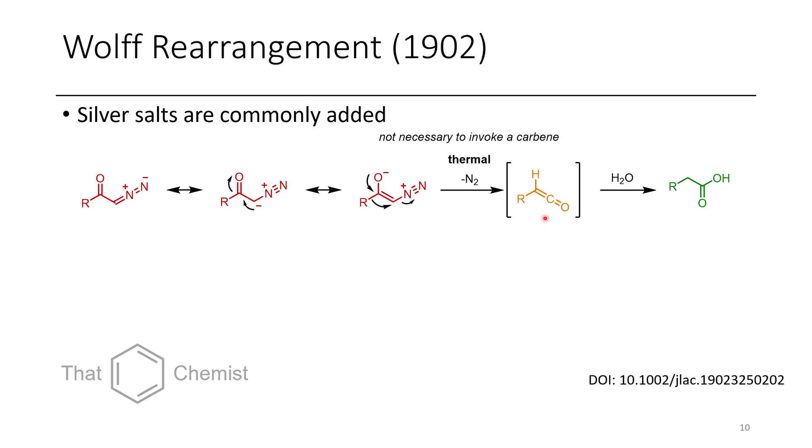A ketene is a bit like an isocyanate or an isothiocyanate, except instead of having a nitrogen here, or here rather, we have a carbon. So a carbon double bond carbon double bond oxygen. Now these are very, very electrophilic at the carbon double bond carbon with the CH, or nucleophilic rather. So this can be a good nucleophile, attack the proton, and then the hydroxide or another water molecule can attack this position and form a carboxylic acid.